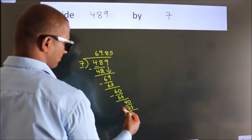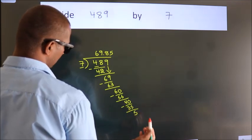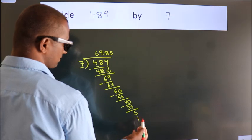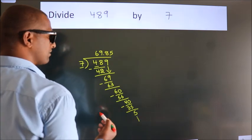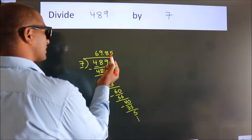Now we subtract. We get 5. And the division continues. It is enough if we do up to two decimal places.